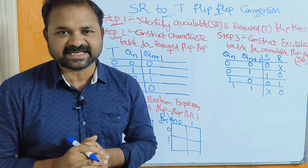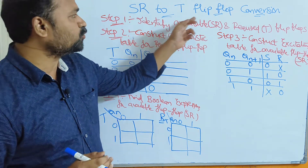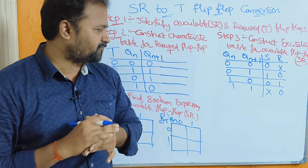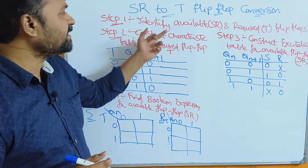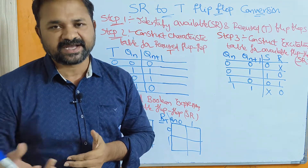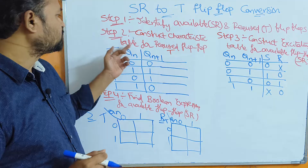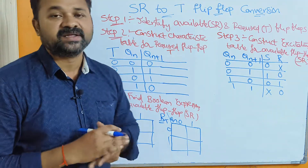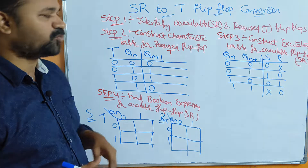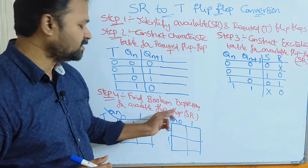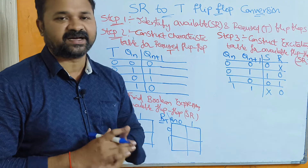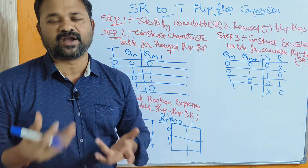Let us discuss SR to T flip-flop conversion. Here, totally we have 5 steps. Step 1 is identify the available and the required flip-flops. Step 2 is based upon the required flip-flop. Steps 3 and 4 are based upon the available flip-flop. Step 5 is we have to construct the logic diagram.